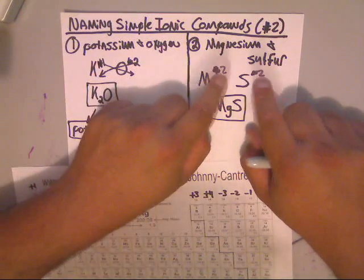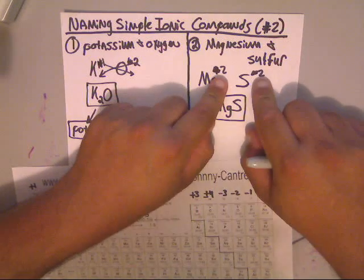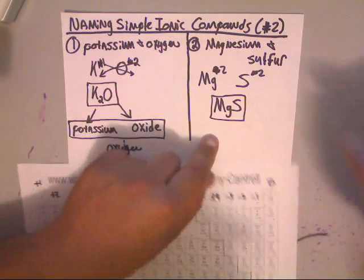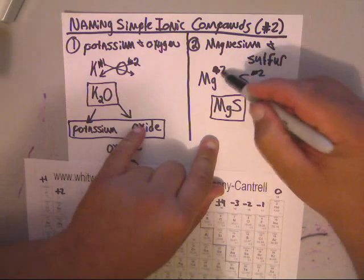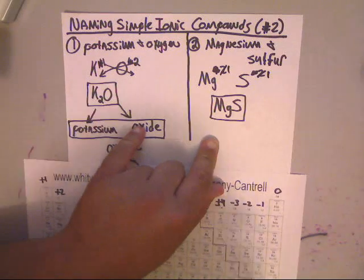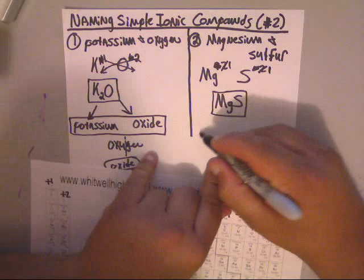Because the 4 and the 2 would reduce to a 2 and to a 1. But remember, if they're identical, this part's easy. If they match, and if they're identical, you just mark them out and don't write them. Because they're not there. Because that reduces to a 1, and that reduces to a 1. And you don't write ones.